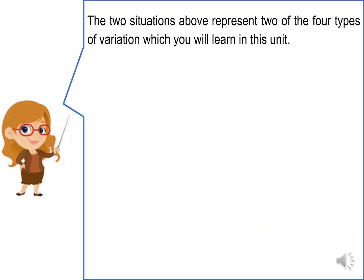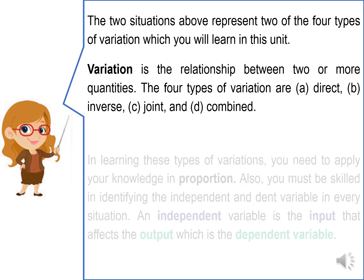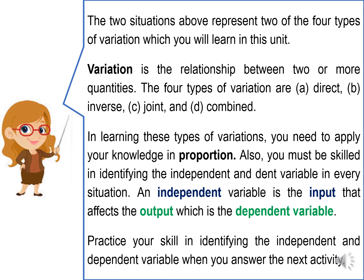The two situations above represent two of the four types of variation, which you will learn in this unit. Variation is the relationship between two or more quantities. The four types of variation are direct, inverse, joint, and combined. In learning these types of variations, you need to apply your knowledge in proportion. Also, you must be skilled in identifying the independent and dependent variable in every situation. An independent variable is the input that affects the output, which is the dependent variable.